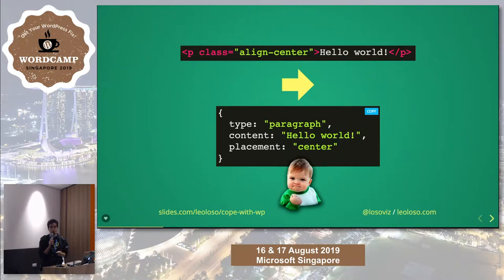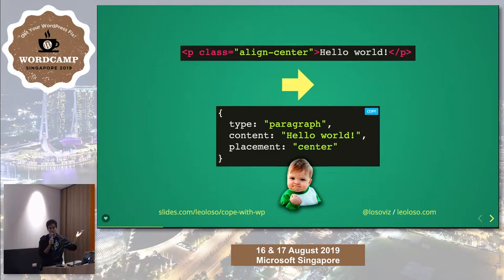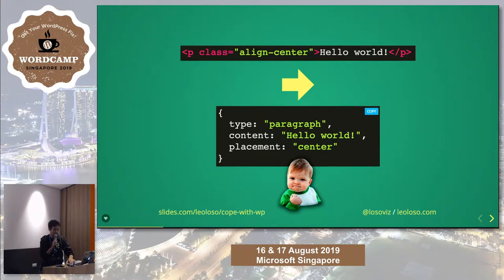This is what we want to achieve. If we can somehow transform our content from HTML — as we input it into our CMS, WordPress — into something resembling this structured format, we've made it. Then we can actually use this content for apps and anything else you can think of.